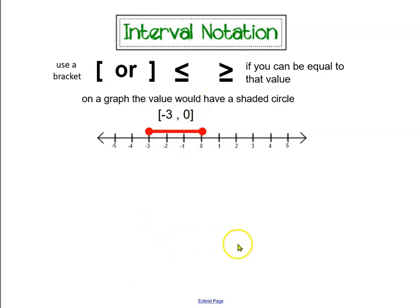In our red example here, both circles are closed. That's why there are brackets on both the left and right side of my values. The value here on the left is negative 3. That's my lowest value. The value here on the right is 0. That's my highest value. And that is the interval notation for the graph shown on the screen.